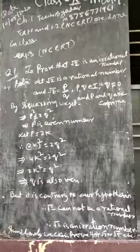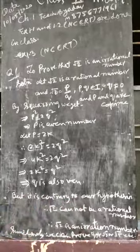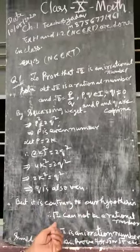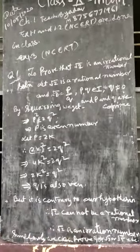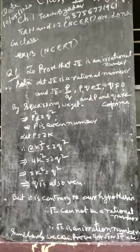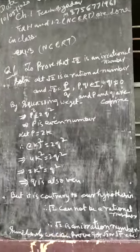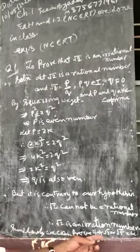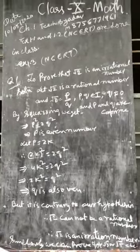But this is contrary to our hypothesis. Therefore root 2 cannot be a rational number, and therefore root 2 is an irrational number. Similarly, we can prove the same for root 3 and root 5.